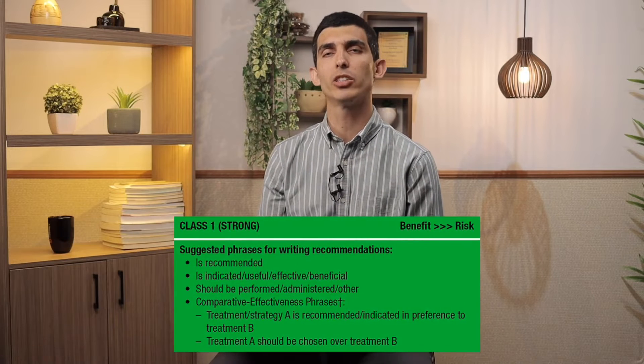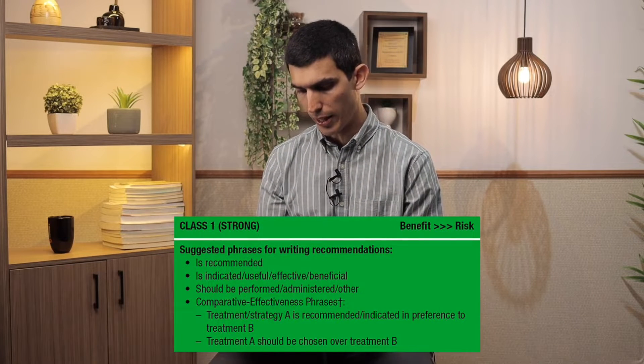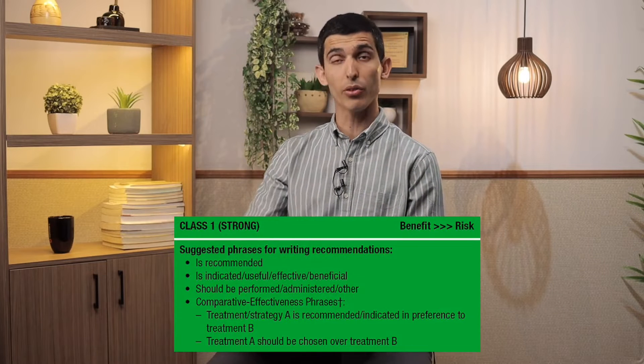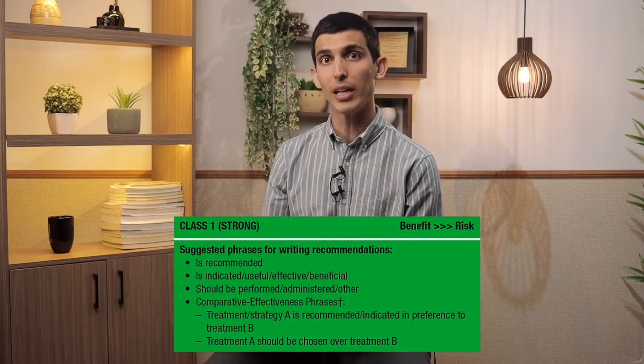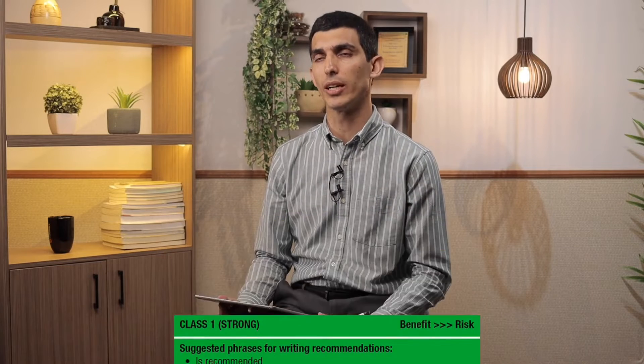A class 1 recommendation means a strong recommendation, as you can see right here. It means that you should do that — the authors of this guideline really believe that you should do whatever that indication is. For example, a class 1 recommendation may be to give aspirin to patients who have had a myocardial infarction. That's a solid recommendation; it's something that absolutely should be done.